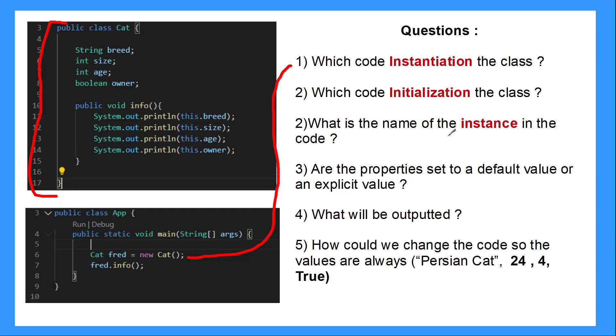What is the name of the instance in the code? Well, the name of the instance is fret. That's the name of the object. Are the properties set to default or is there an explicit value? So if you see up here, we've set our properties for our class, but we haven't actually attached any value to it. So it will be its default value.